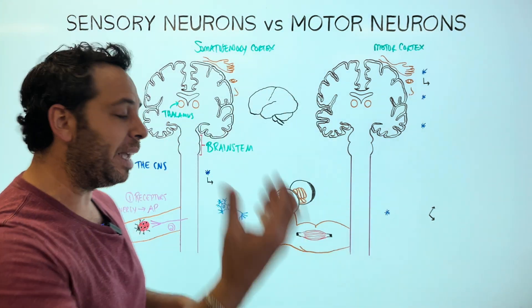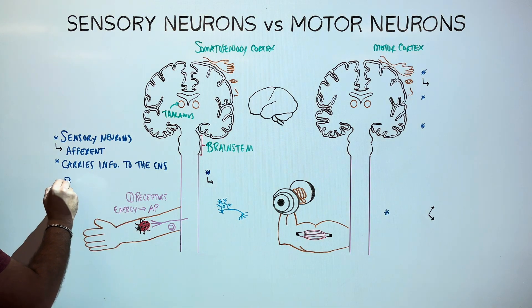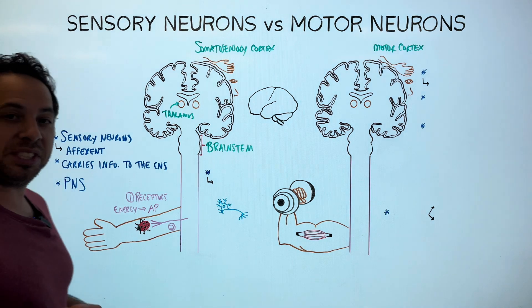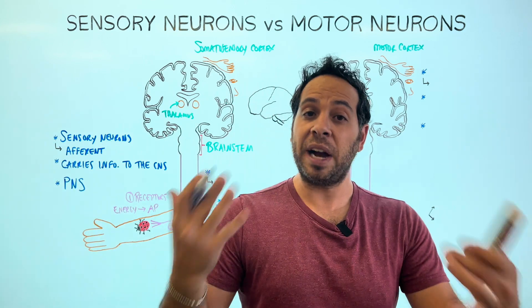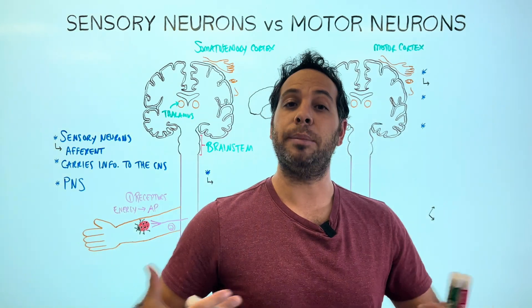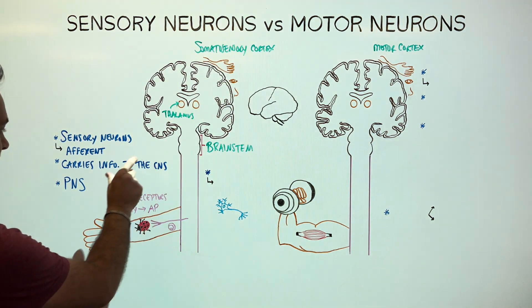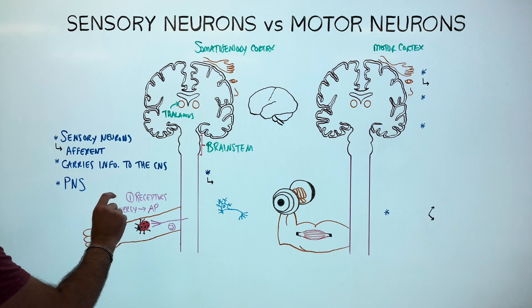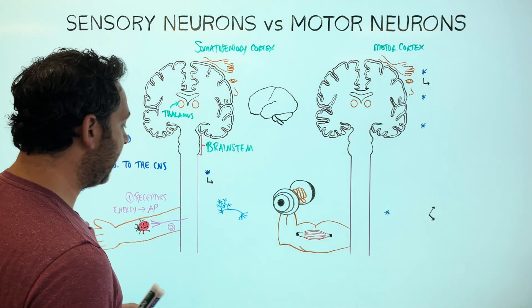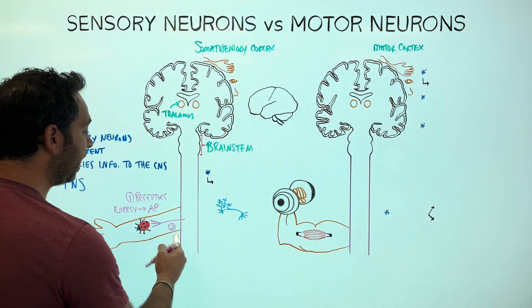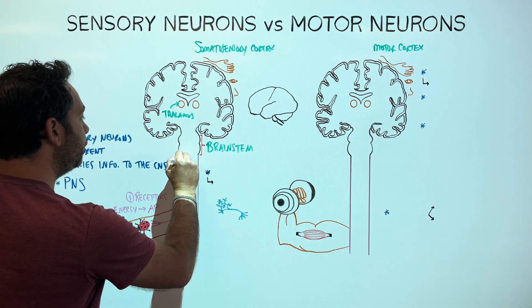Sensory neurons ascend so the brain can make sense of the information. We find these sensory neurons in our peripheral nervous system — peripheral means outside, so this includes our arms, legs, anything outside of our brain and spinal cord. So we have detection, we turn that into an electrical signal, and that signal travels via the sensory neuron, ascending the spinal cord.